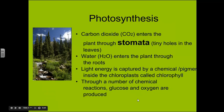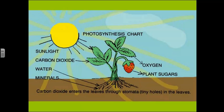The carbon dioxide actually enters the plant through the stomata — those are the tiny holes on the bottom side of the leaf. Water enters the plant through the roots, which is why plants have roots. The light energy is captured by a chemical pigment inside the chloroplasts called chlorophyll. Then we go through a whole number of chemical reactions, and we get glucose and oxygen out the other side.